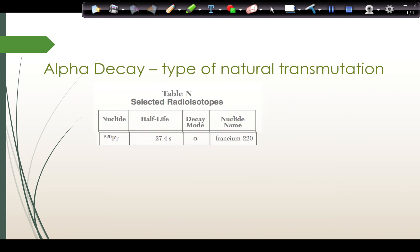For alpha decay, that would be one type of natural transmutation. Remember, transmutation is when we have an atom of one element spit something out of its nucleus or emit something from its nucleus and turn into another element. For example, francium 220, it says that it has a decay mode of alpha decay. We're going to first write francium 220, then francium 220 by itself before the arrow because this is going to be natural transmutation.